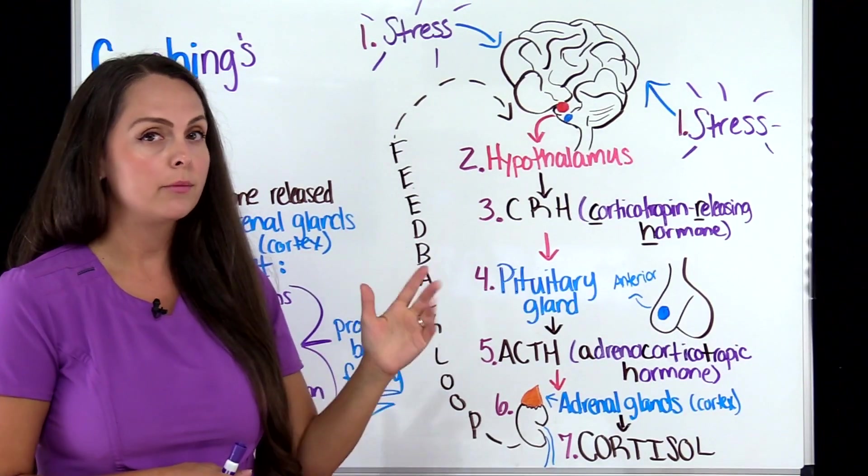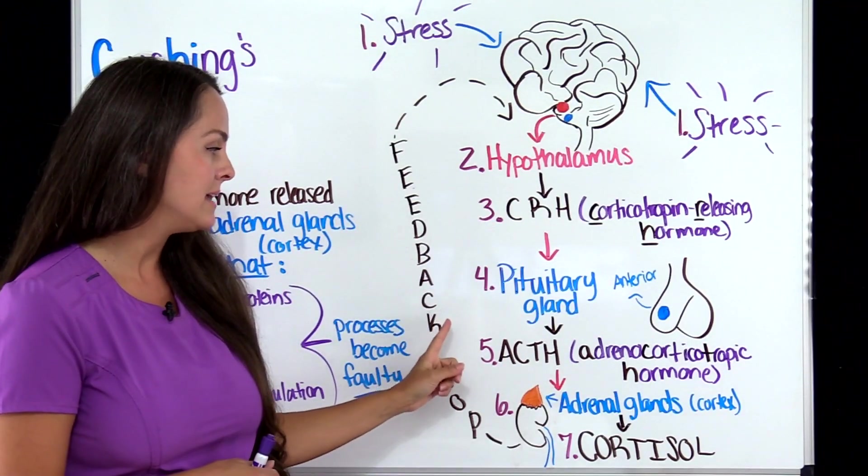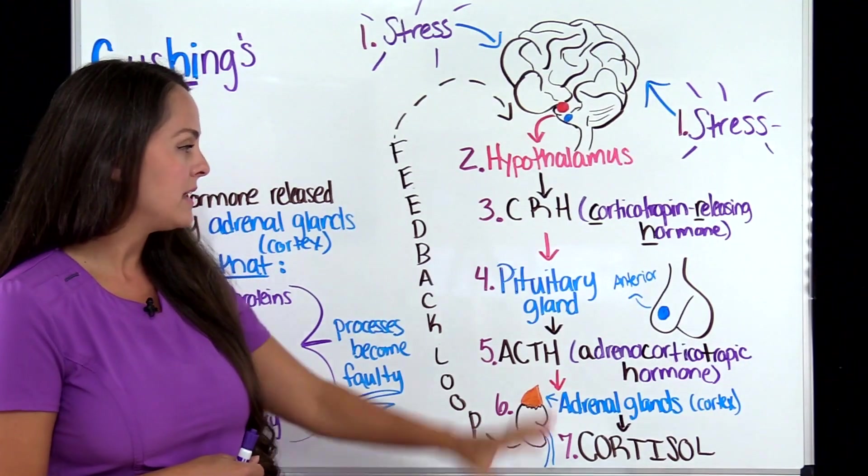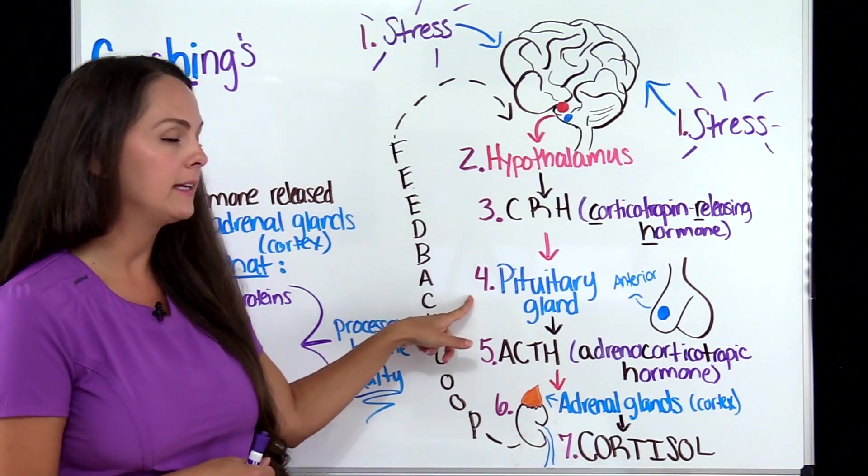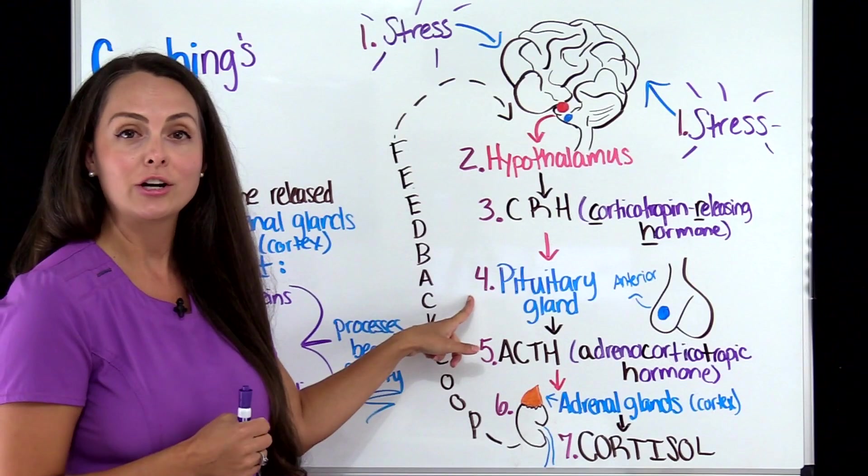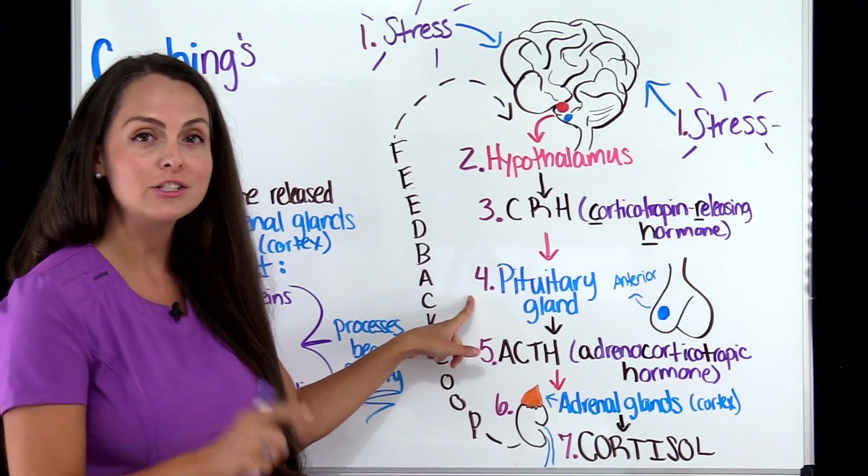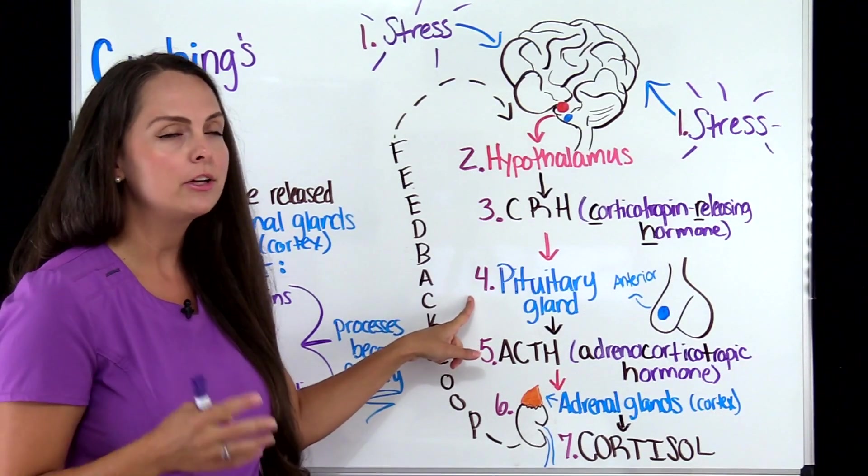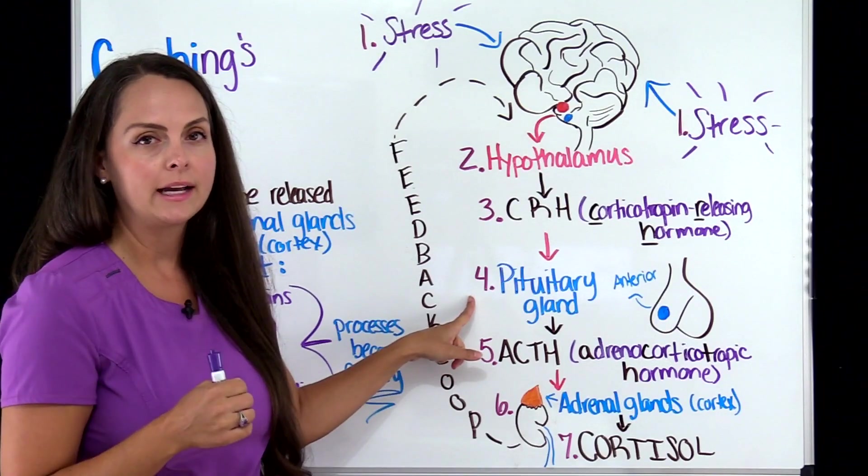So whenever you look at blood work, you're going to have high ACTH and high cortisol. Now that tells you it's coming from the pituitary gland. And that occurs in Cushing's disease. So Cushing's disease involves typically, usually pituitary gland tumors.